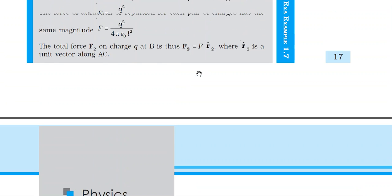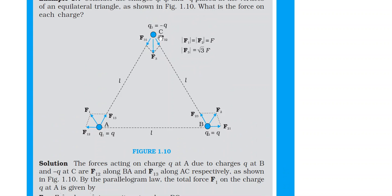Newton's Third Law states that if one object applies a force of action, the second object applies a reaction. You can see that if A attracts C in one direction, then C attracts A towards itself — both forces are in opposite directions, like action-reaction pairs. Similarly for the other pairs, forces are in opposite directions. Looking at the whole system of three particles, no external force is acting on the system.